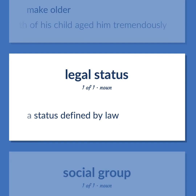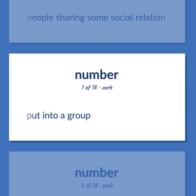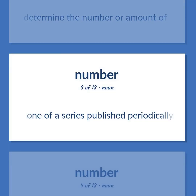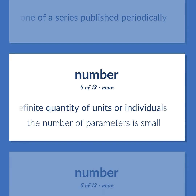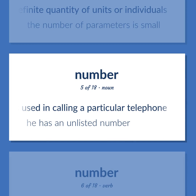Number. A status defined by law. People sharing some social relations. Put into a group. Determine the number or amount of. One of a series published periodically. The property possessed by a sum or total or indefinite quantity of units or individuals. Example: The number of parameters is small. The number is used in calling a particular telephone. Example: He has an unlisted number.